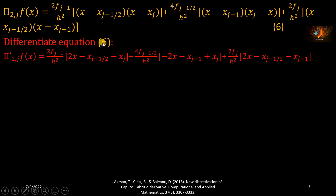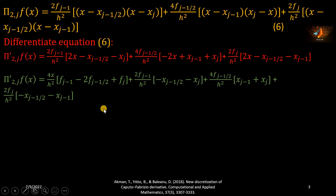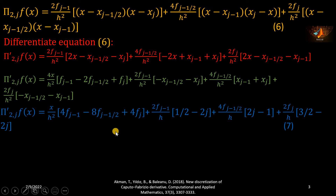Now I differentiate equation number 6 with respect to x, obtaining the red color equation, wherein x_j can be replaced by j times h and x_{j-1/2} can be replaced by (j - 1/2) times h, and so on. Collecting the terms with the x variable gives the green color equation. Applying those relations then gives the blue color equation, which is equation number 7.